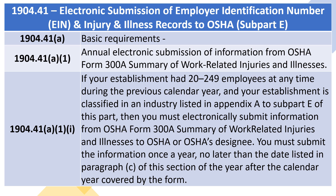1904.41(a)(1)(i): Annual Electronic Submission of Information from OSHA Form 300A, Summary of Work-Related Injuries and Illnesses. If your establishment had 20 to 249 employees at any time during the previous calendar year, and your establishment is classified in an industry listed in Appendix A to this subpart, then you must electronically submit information from OSHA Form 300A to OSHA or OSHA's designee. You must submit the information once a year, no later than the date listed in Paragraph C of this section of the year after the calendar year covered by the form.